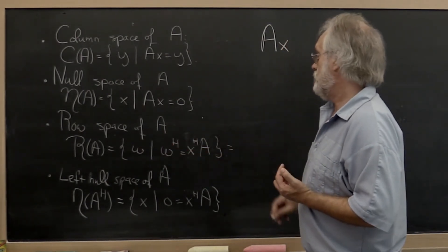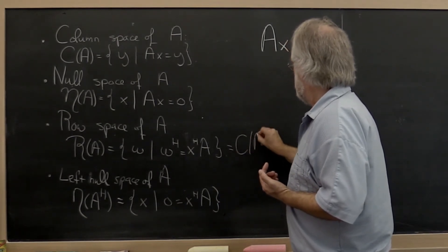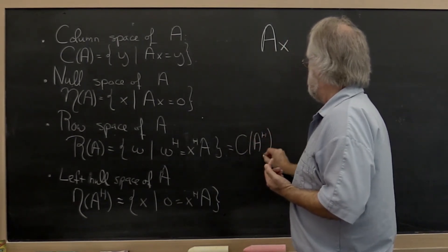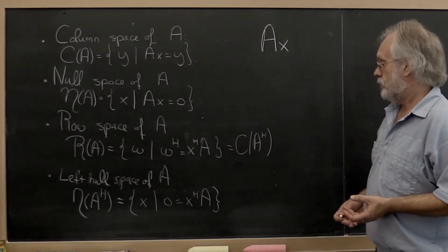And obviously the row space of A is equal to the column space of the Hermitian transpose of A or the transpose of A. Whichever you prefer.